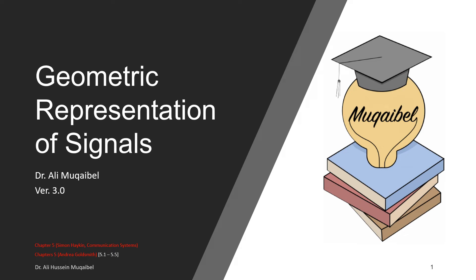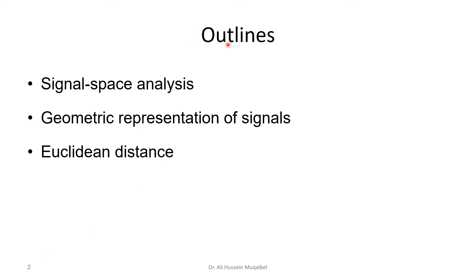Good day everybody, this is Dr. Ali McGable. The topic for today is geometric representation of signals. The material for this part can be found in Haykin's book 'Communication Systems' or our usual textbook by Andrea Goldsmith, corresponding to chapter five. The outline for the presentation includes signal space representation, geometric representation of signals, and the Euclidean distance — three things to cover in this topic.